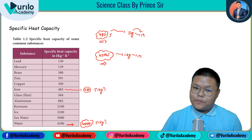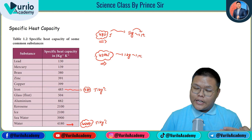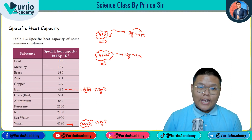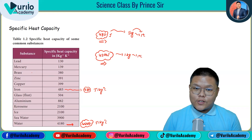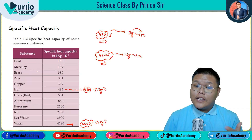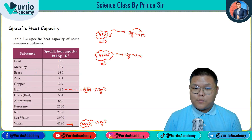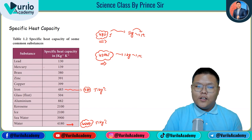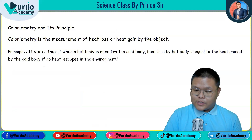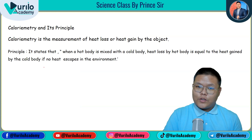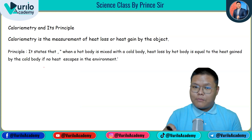If you give the same heat to iron and water, there will be a difference in the heat capacity effect. This is the first point. Now we are going to do calorimetry and its principle. We are going to mix two objects together. Calorimetry is generally the measurement of heat lost or heat gained by an object.